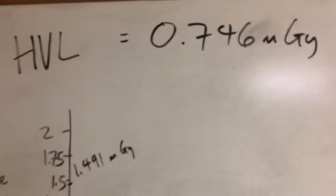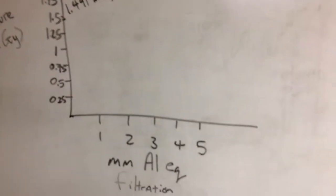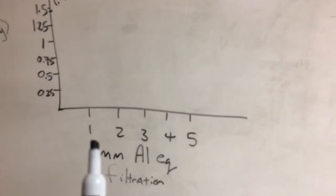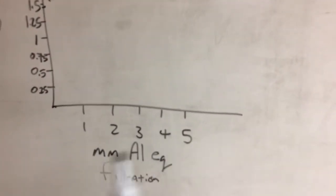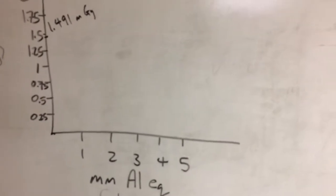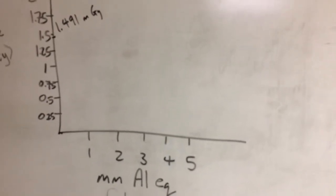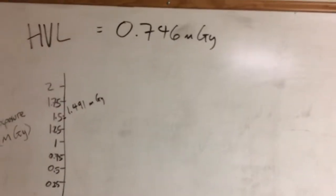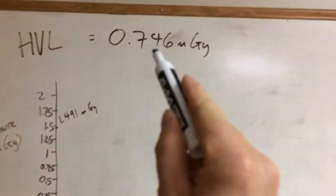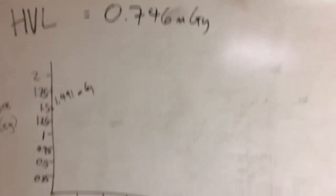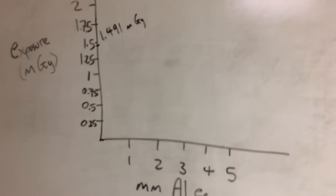When we get to the half-value layer, when we add enough aluminum, if we add 1mm of aluminum, 2mm, 3mm, 4mm, etc., whatever amount of aluminum equivalent that we need to add filtration-wise that results in that measurement of exposure, we will have arrived at the half-value layer for this x-ray tube operating at this energy level.